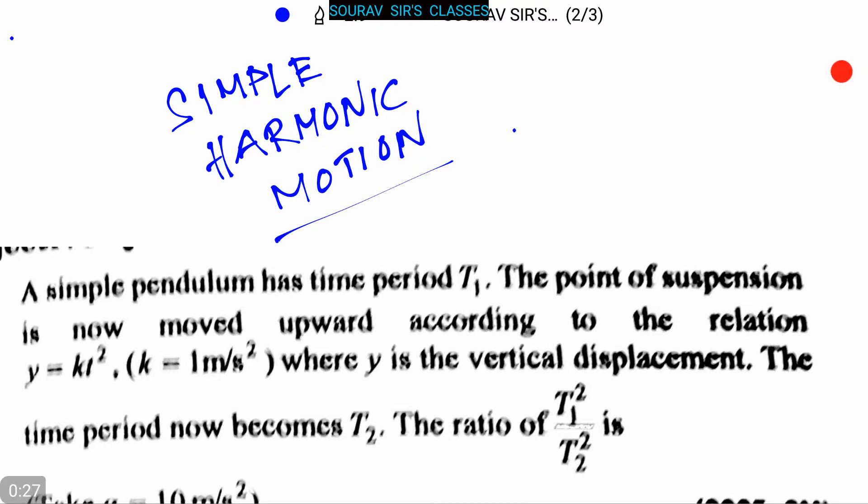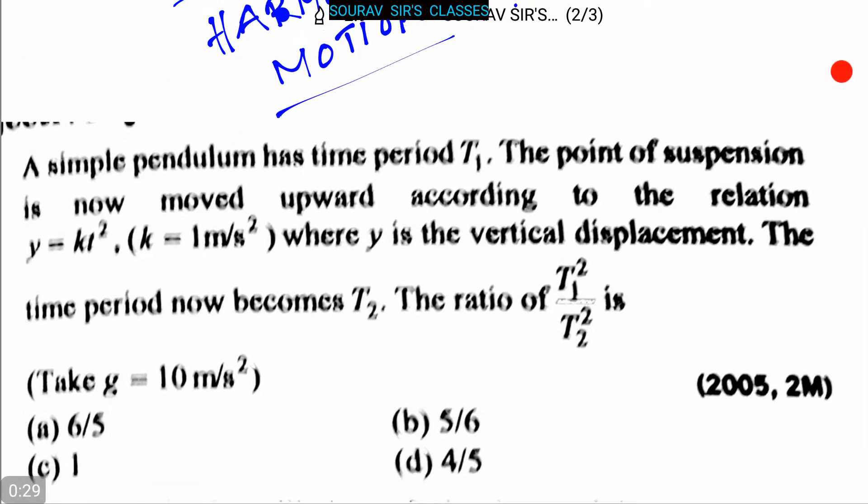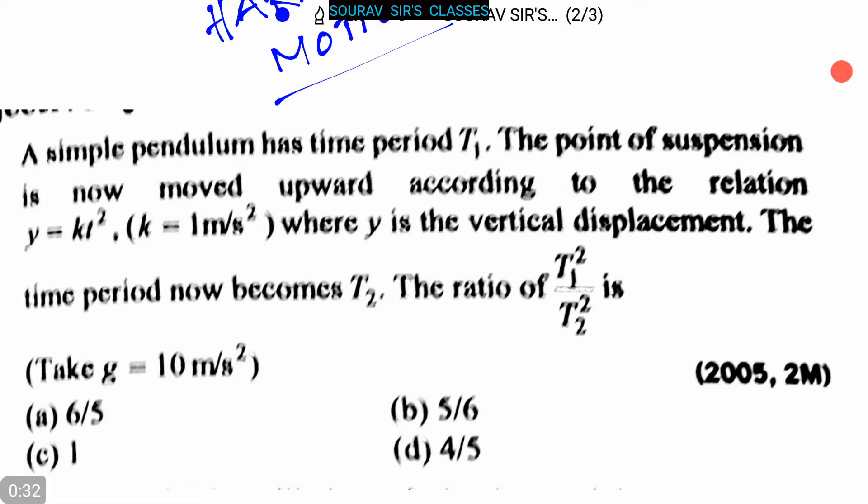Today our topic is simple harmonic motion. Here is our first question: A simple pendulum has time period T₁. The point of suspension is now moved upward according to the relation y = kt², where k = 1 m/s², where y is the vertical displacement.